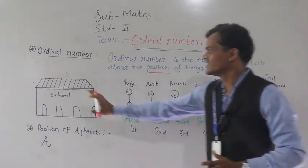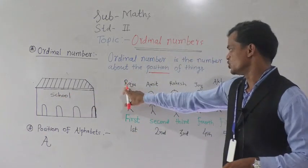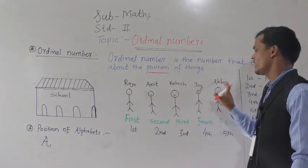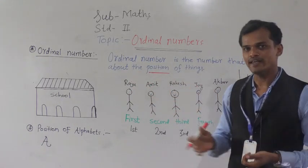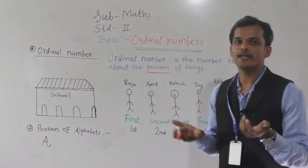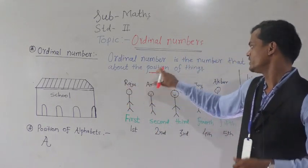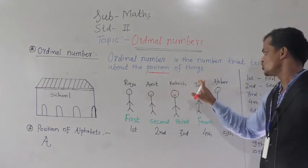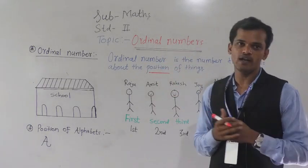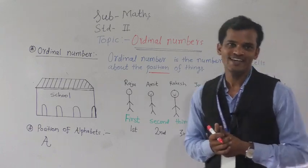Suppose this is the school and Raju, Amit, Rakesh, Joy, and Akbar are standing in a queue. So how can you identify the position of Raju, Amit, Rakesh, Joy, and Akbar? By using ordinal numbers we can tell the position easily.